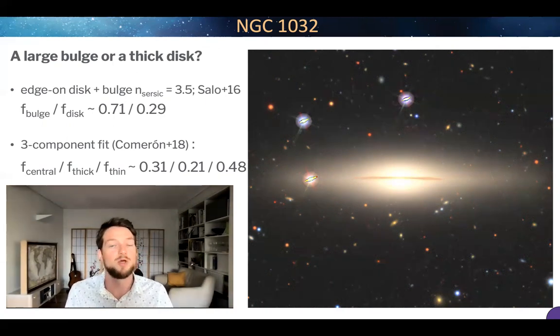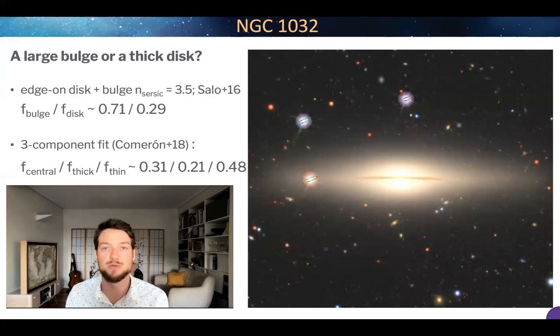So maybe the bulges that we're looking at when we're doing a simple bulge-to-disk decomposition could actually be contributed to by thick disks. For NGC 1032, I think the answer lies in deep MUSE IFS data that does not yet exist. So this emphasizes the fact that we really need to look at galaxies with deep integral field spectroscopic data if we want to understand how these bulges form.